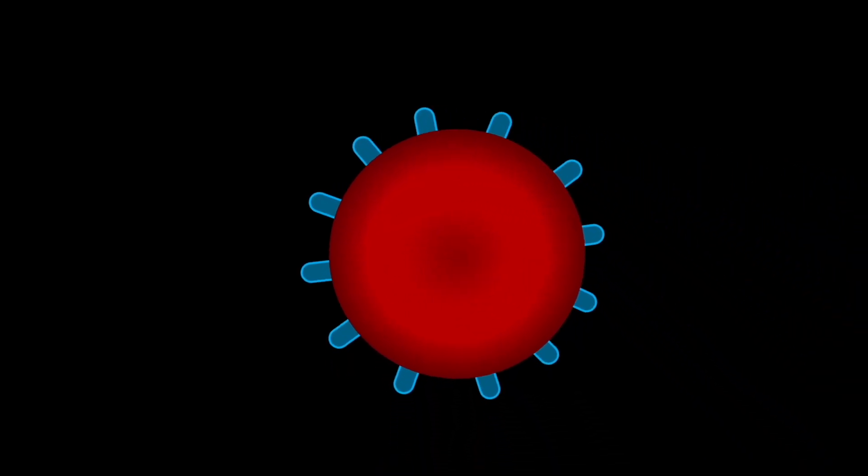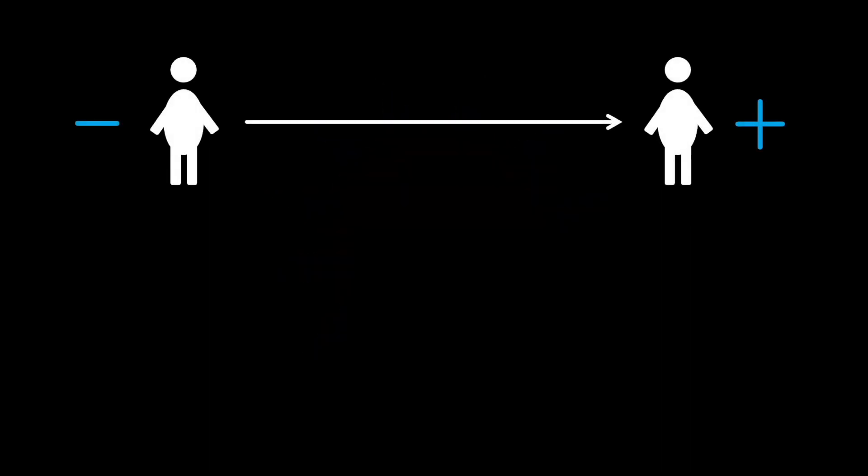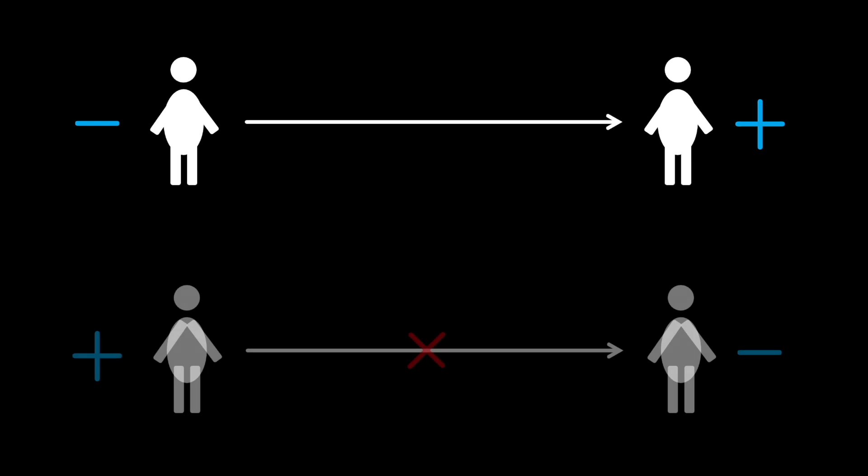The white blood cells of people with negative blood types produce anti-D antibodies which target the cells for attack. Therefore, although a negative donor is free to give blood to a positive recipient, a positive donor is unable to give blood to a negative recipient as the white blood cells of the recipient will produce antibodies against the donated cells.